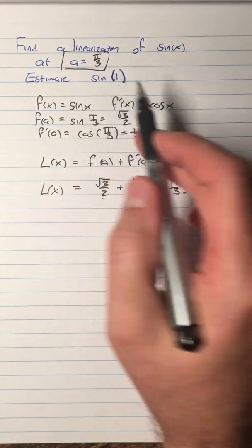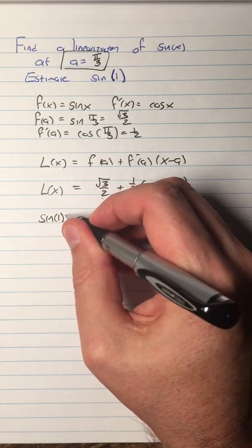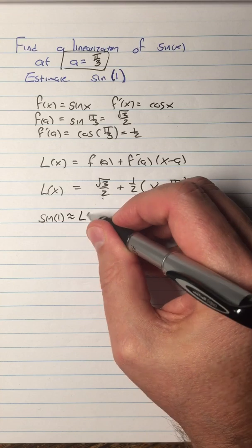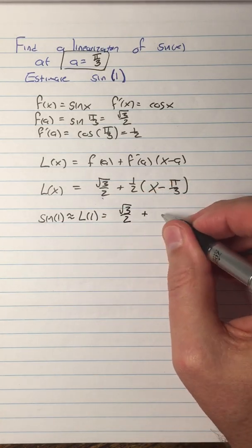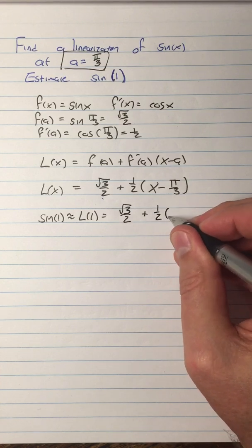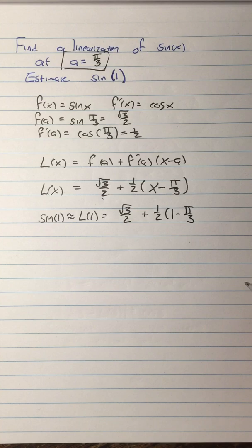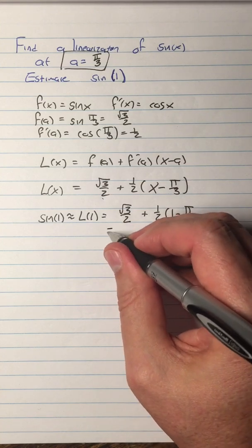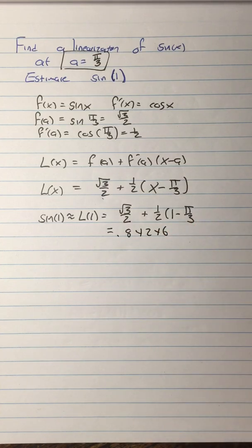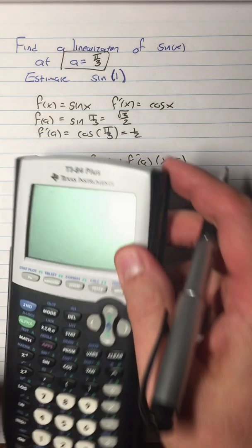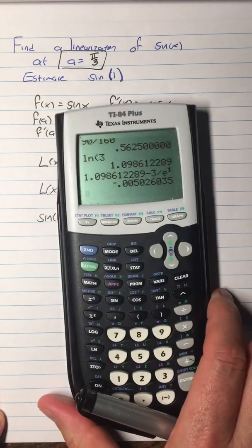Now, the second part is to estimate the sine of 1. So the sine of 1 is approximately equal to L(1), so that's going to be √3/2 + 1/2(1 - π/3). And I already did that on my calculator, and it's about 0.84246. When I did sine of 1 on my calculator, I'm just going to put that on here so we know where things are coming from.